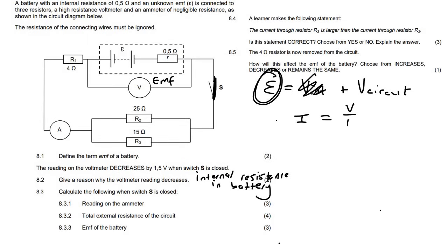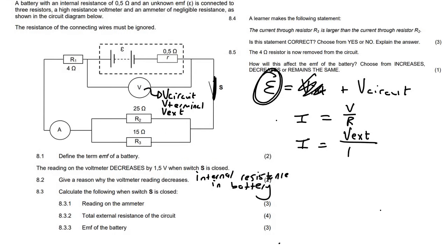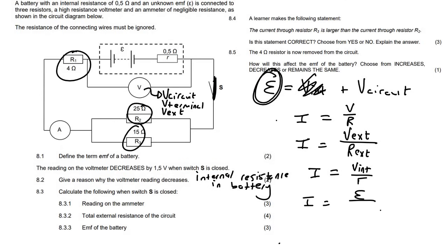We know I equals V over R. If you use the external or terminal voltage, you must use only the external resistors. If you want to use the internal voltage, you use the internal resistor. If you want to use the EMF of the battery — since EMF is the total — then you must use the external resistors and also the internal resistor. This is the same formula just written differently.